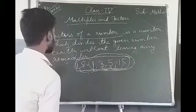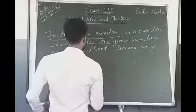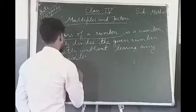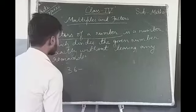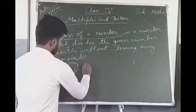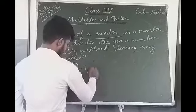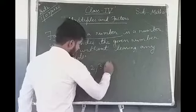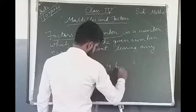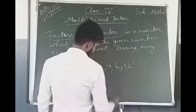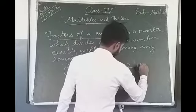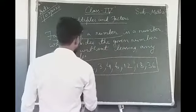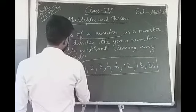In this way we can learn the factors of a given number. We will take one more example for better understanding. Suppose 36. From which tables is 36 divisible? The factors are 1, 2, 3, 4, 6, 12, 18 and 36. These are the numbers which are exactly divisible into 36.